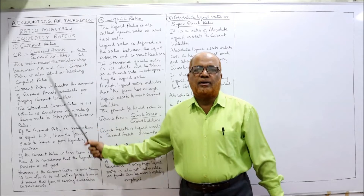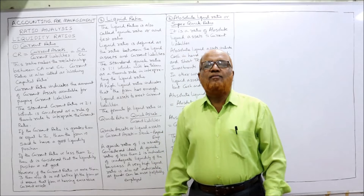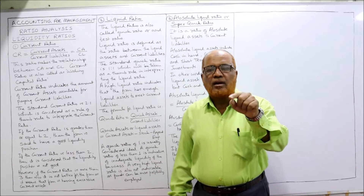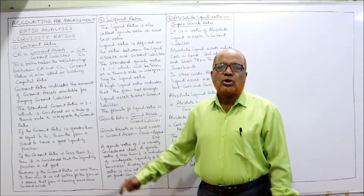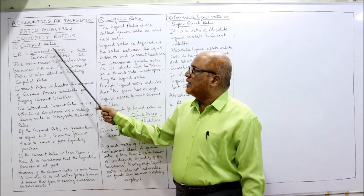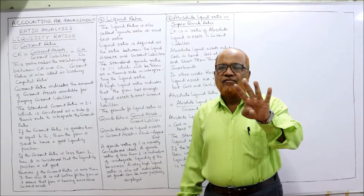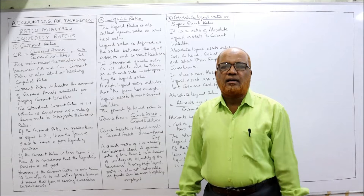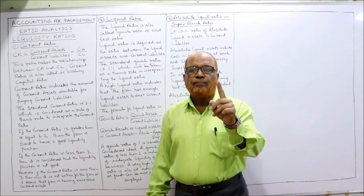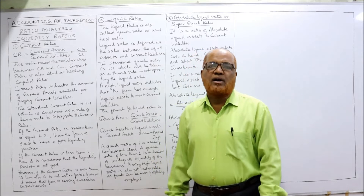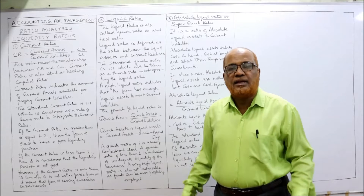Current assets divided by current liabilities means: for every one unit of current liability, how many units of current assets are there? The denominator is current liability and the numerator is current assets. For example, if current assets are 4 lakh and current liabilities are 1 lakh, then for every one rupee of current liability we have 4 rupees of current assets — current assets are 4 times the current liability.